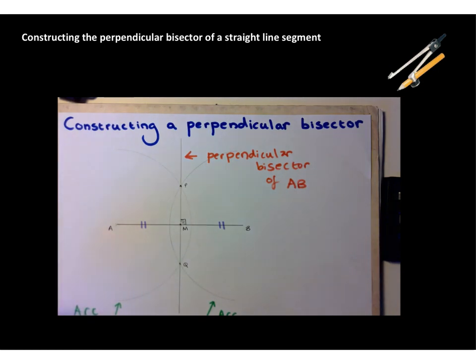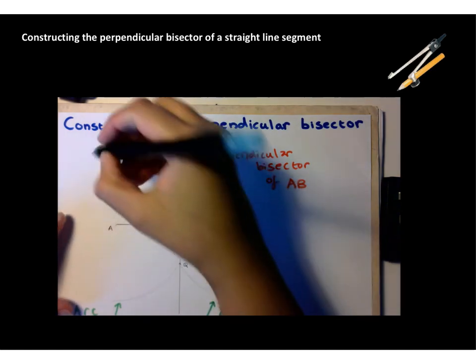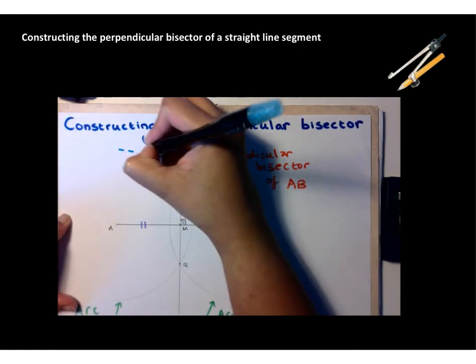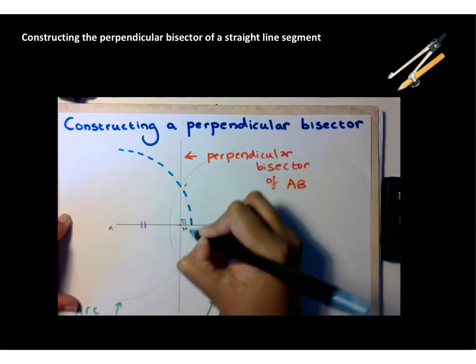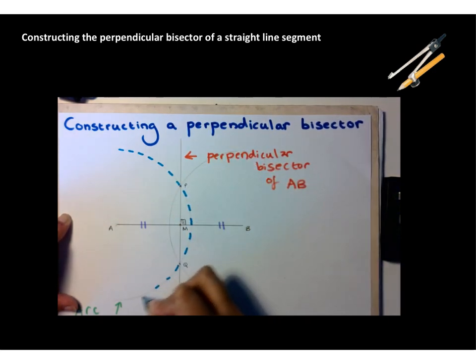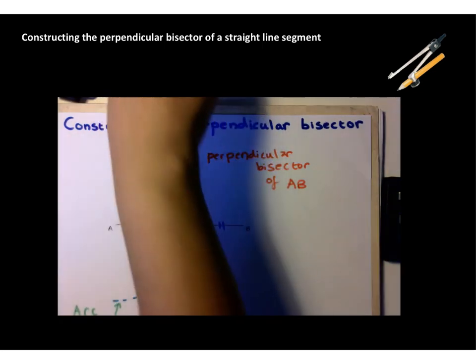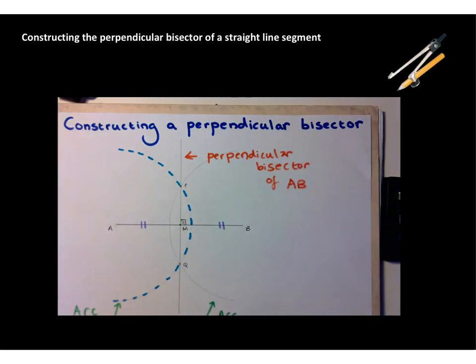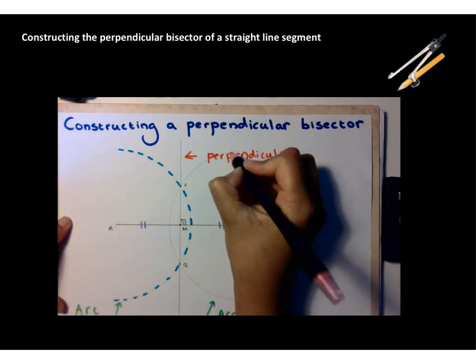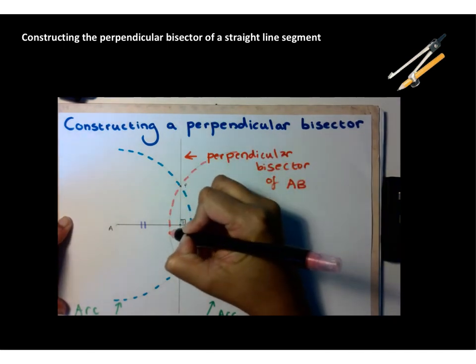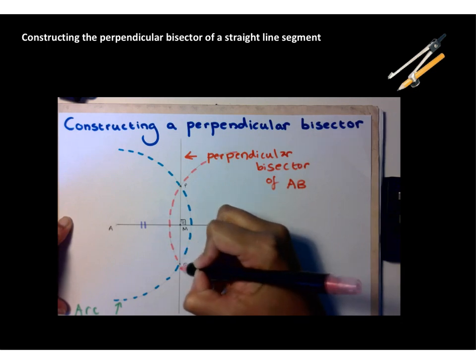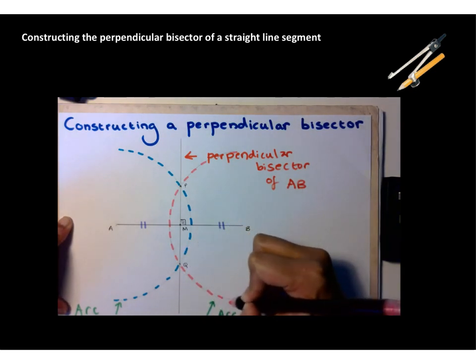Now, why does it work? Let's take a careful look at what happened here. All of these points here, on the arc of the circle centered at A, are equidistant from point A. They're all exactly the same distance from point A. All of the points on the circumference of this circle, this arc here, are exactly the same distance as each other from point B.